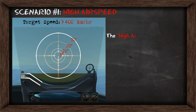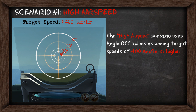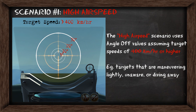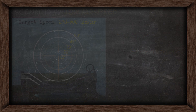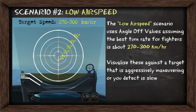The first is the high airspeed scenario. These are the angle-off values you'll use when assuming the target is flying faster than 400kmph. These could be targets that are lightly manoeuvring, unaware of your presence, or they're diving away. The second scenario is about low airspeed, and this uses angle-off values assuming the best turn rate for fighters is around 270-300kmph. You want to visualise these values against a target that is aggressively manoeuvring or flying slow.